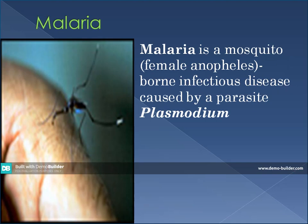Malaria is a mosquito-borne infectious disease caused by a parasite called the Plasmodium parasite. Malaria is transmitted by a mosquito — the female Anopheles mosquito — but what causes malaria is the Plasmodium parasite. Let's not be confused between what causes malaria and what transmits malaria.